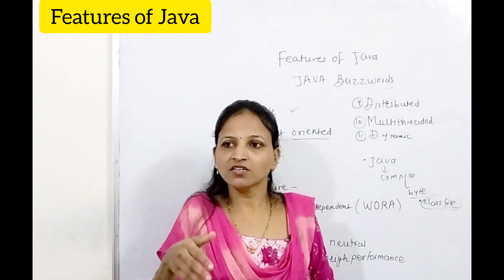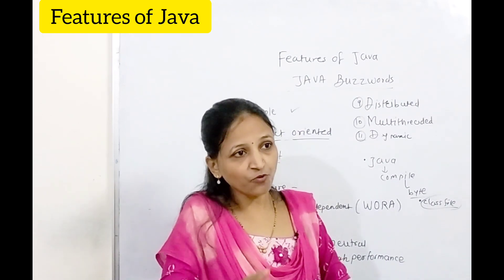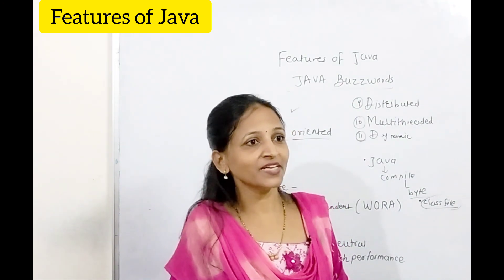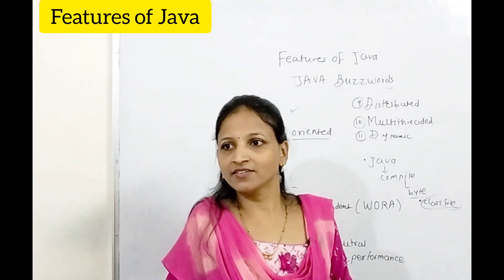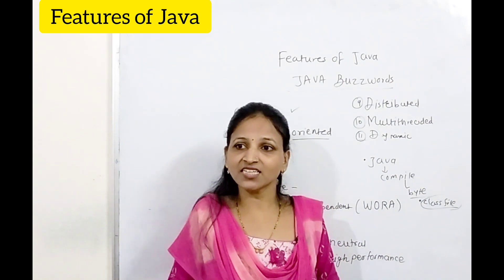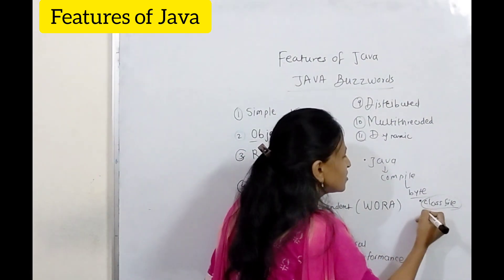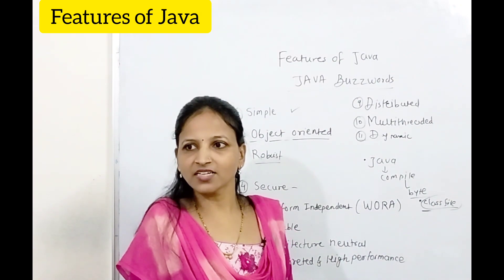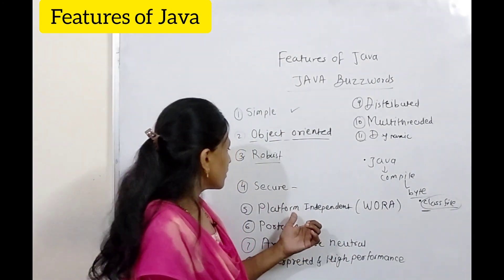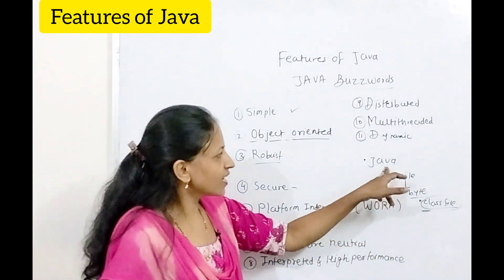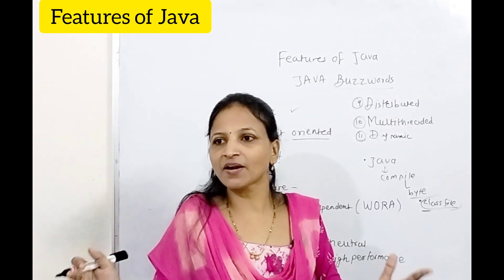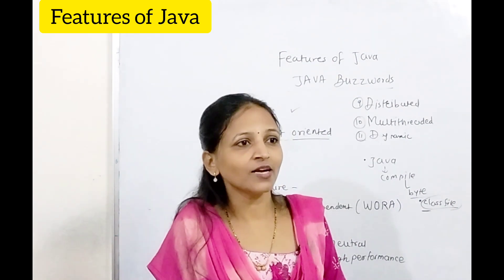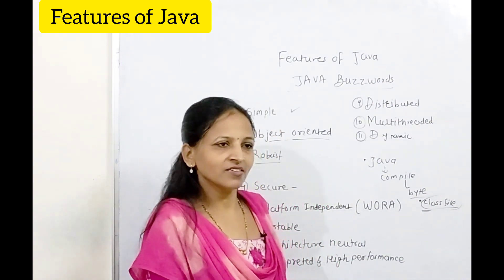If you are running a Java program on a Windows operating system, you need the JVM for Windows. For Linux, you need the JVM for Linux installed on that Linux machine. Then the Linux JVM converts the .class file into the machine language of Linux and executes it. Because of this, Java is platform independent — you can write on any platform and run on any other platform, as long as that machine has a Java Virtual Machine installed.